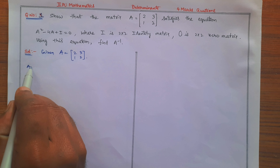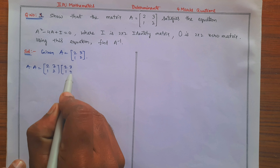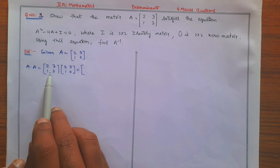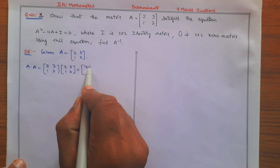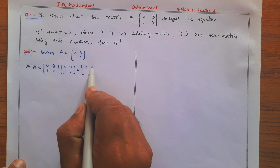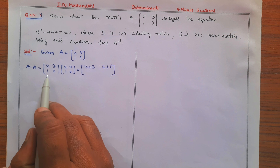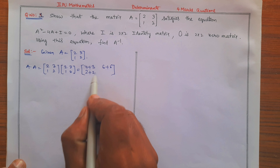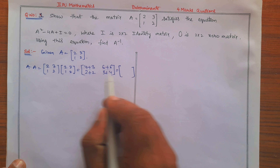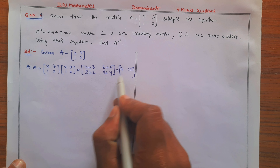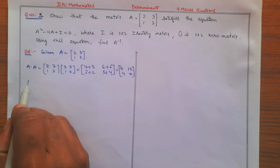First, find A² = A into A = [2,3;1,2] × [2,3;1,2]. Multiply row by column: 2×2 + 3×1 = 7; 2×3 + 3×2 = 12; 1×2 + 2×1 = 4; 1×3 + 2×2 = 7. So A² = [7, 12; 4, 7].